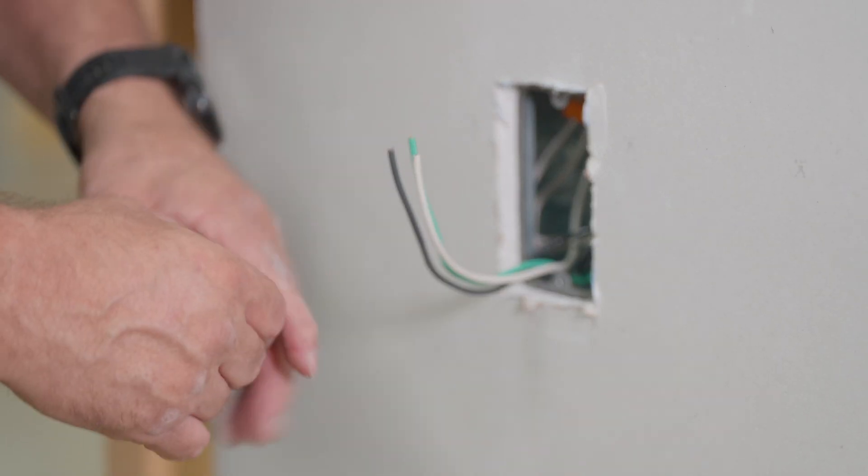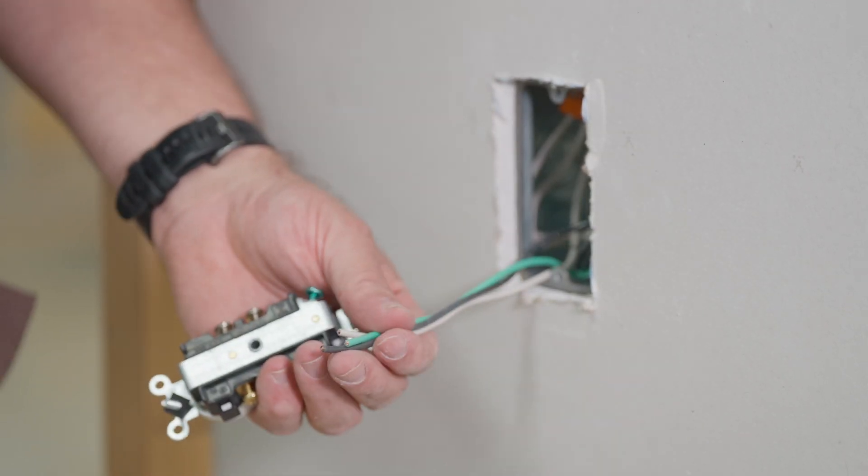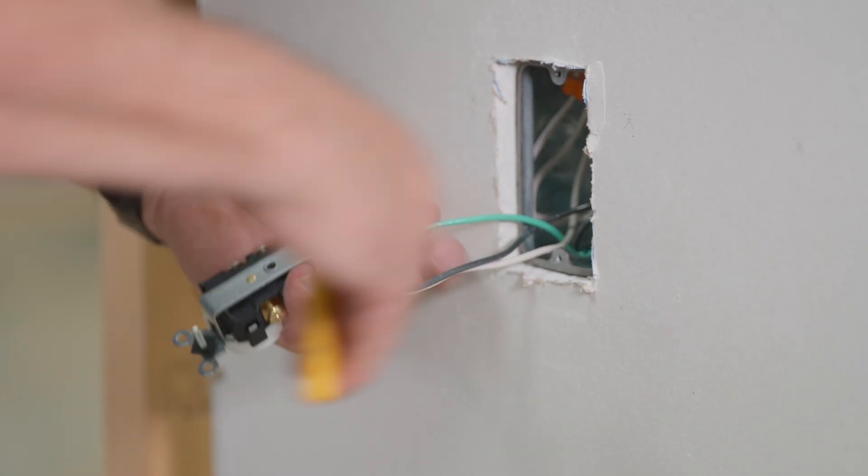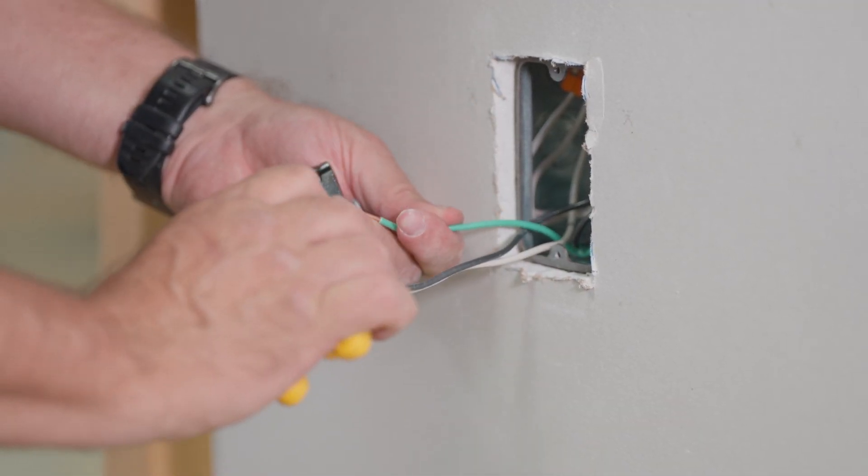This is a simple 20 amp receptacle. Let's install it. We'll pull these wires out. First thing you want to do is strip them and you're going to create a loop. We're going to strip them about this long and put a loop right here, and this is going to go around your terminal.